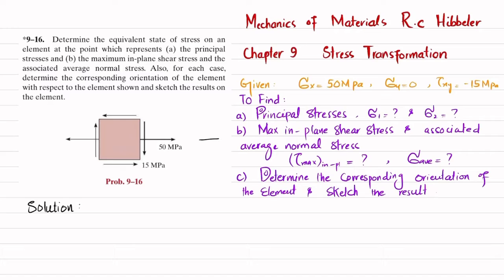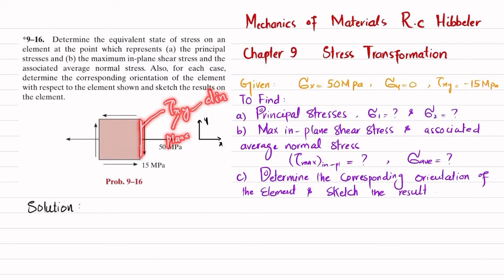So let's start with the solution. You can see this is your x, this is your y. This face is the x-plane. For tau of x in y: x is the plane and y is the direction. You can see on this plane the y is downward, so tau of xy is negative.